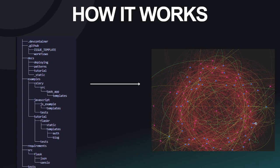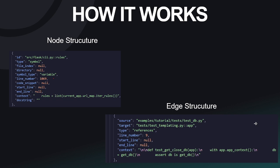So how does it work? The goal of this project is to convert a given directory format to a depiction of the graph, where each node consists of the code snippets, whereas the edges hold the relationship between these nodes. On screen, you can see how a typical node structure and edge structure would look like. The node structure has a type which holds the kind of symbol it is — like a function or a class — along with line number, code snippet, start line and end line. The edge structure holds the source and target nodes, as well as the context for it.